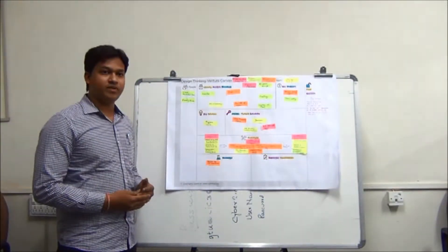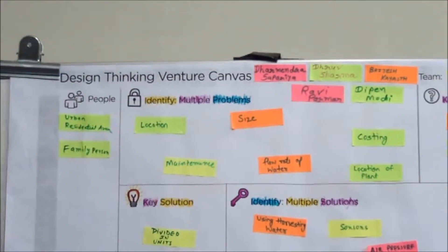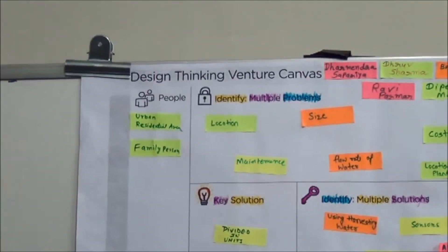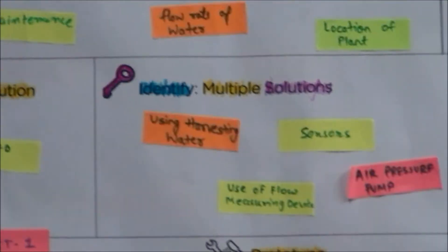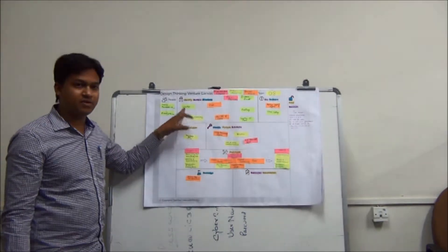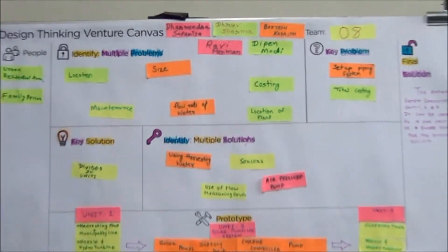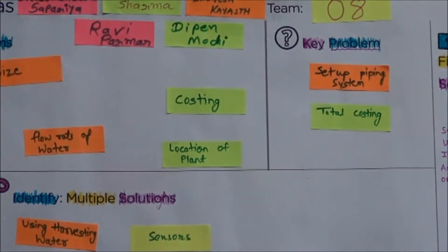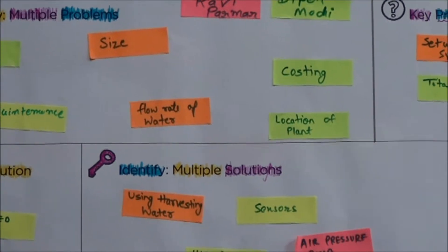This is the fourth canvas of design thinking — the Venture Canvas. Here we go up to the final solution. The people who are going to use our product and their problems are considered. We made a product prototype in the third canvas, then after redesigning by addressing many problems and their solutions, multiple problems emerged: location, costing, flow rate of water, maintenance, and location of the plant. From these multiple problems, we come to the key problem: the setup of the piping system and the initial costing of this product.